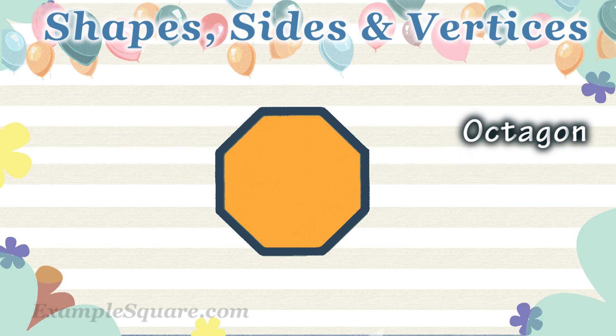How many vertices does an octagon have? An octagon has 8 vertices.